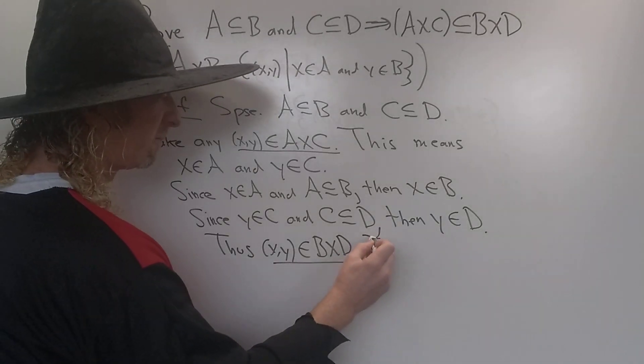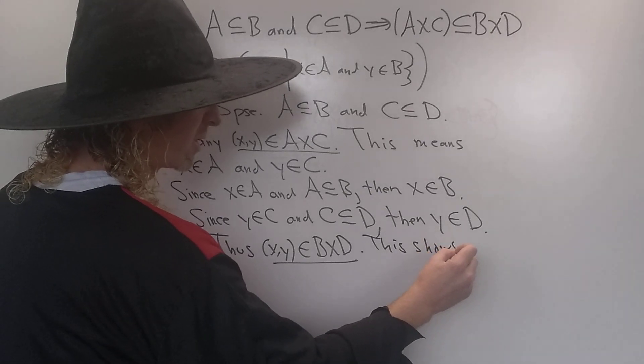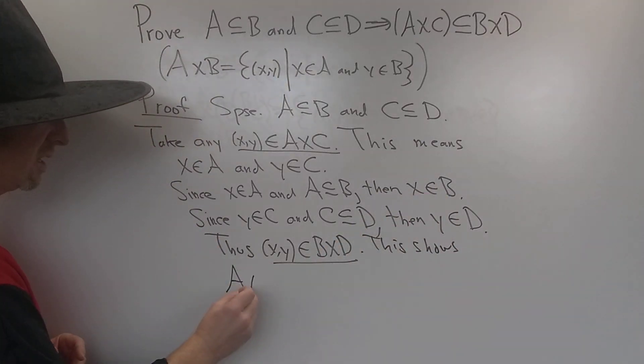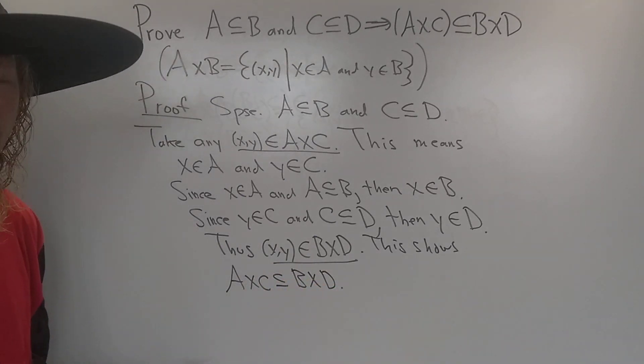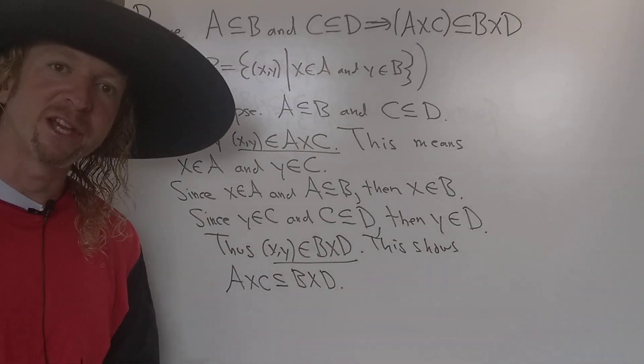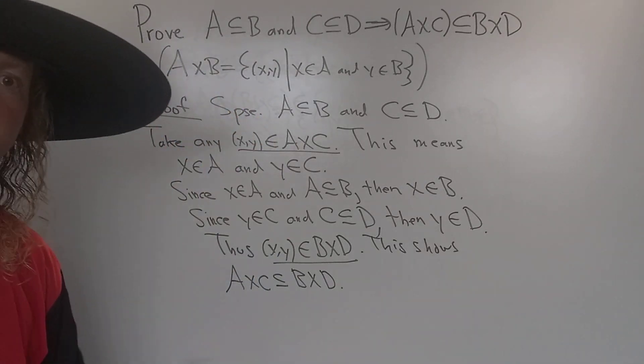This shows that A cross C is a subset of B cross D. And that completes the proof. Hopefully that made sense, hopefully you can see all this. Thanks for visiting my channel. Until next time, take care.